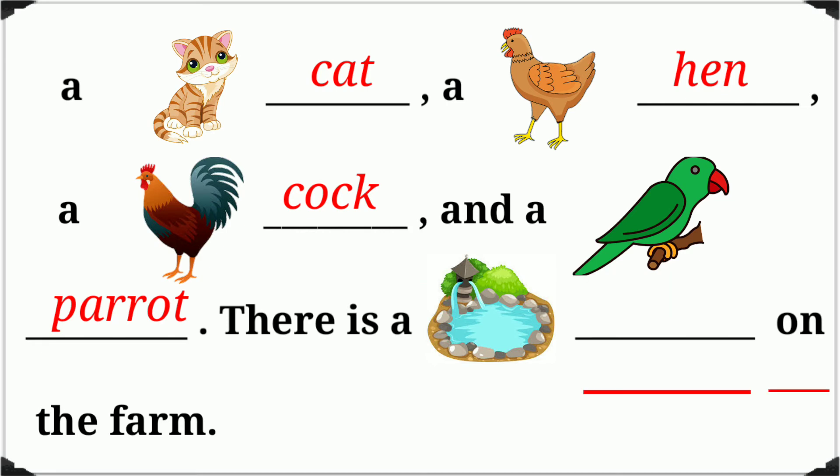There is a... on the farm. What is this? This is a pond. There is a pond on the farm.